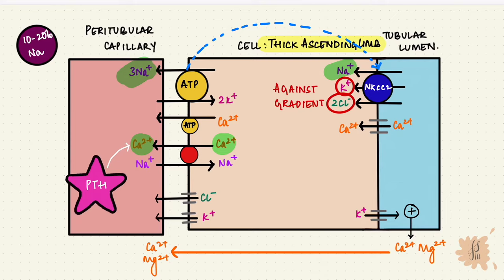There's also a sodium hydrogen exchanger. The thick ascending limb has the sodium hydrogen countertransport, so it mediates sodium reabsorption and hydrogen secretion, contributing to acidification of urine.